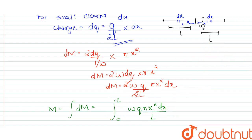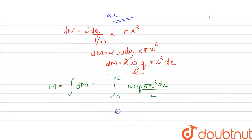So here we will see omega Q π upon L, this is constant. We will integrate x squared dx from 0 to L.